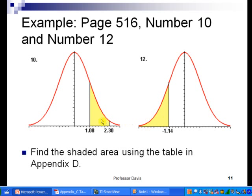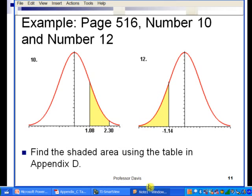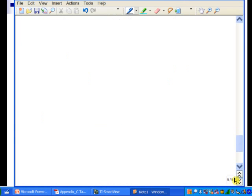Let's find the shaded area using the standard normal table from the back of the book. In number 10 here, we want to find the area trapped in between 1.08 and 2.30. Let's get going on that now.